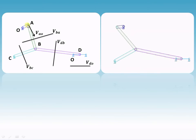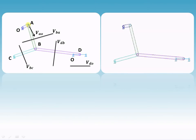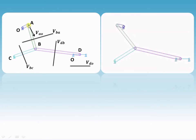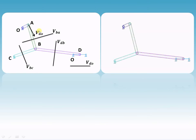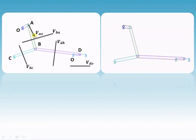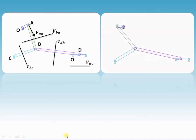Only velocity V_AO is known in both magnitude and direction. From the data given in the example, we can find this velocity using V = Rω, and then represent this vector to a suitable scale.